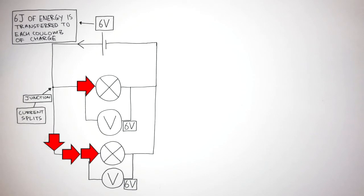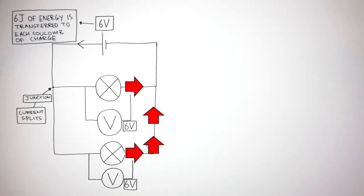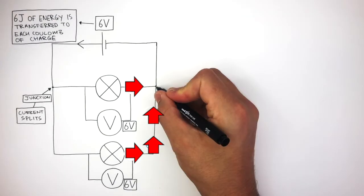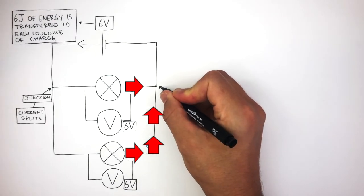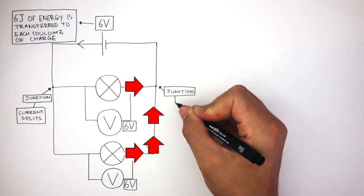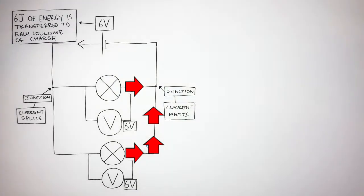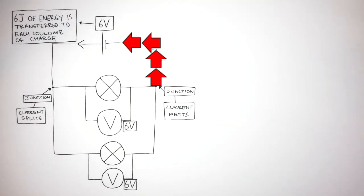Current flows out of the filament lamps and continues to flow through the metal wire until it gets to the second junction. At this junction the current meets and joins up again, flowing back to the negative terminal of the cell.